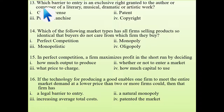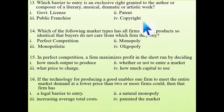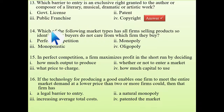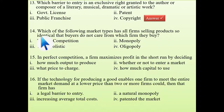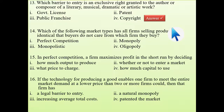Thirteenth question: which barrier to entry is an exclusive right granted to the author or composer of a literary, musical, dramatic, and artistic work? This barrier to entry is called copyright. Fourteenth question: which market type has all firms selling products so identical that buyers do not care from which firm they buy? That means the product is very homogeneous, and homogeneous products are only available in a perfect competitive market.